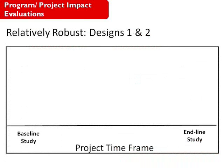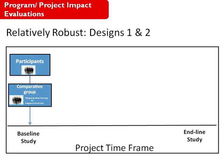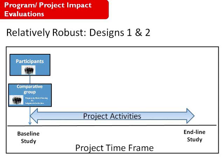Let's start with a general project framework in which the graph shows the baseline study on the left and an endline study on the right, representing the overall project timeframe. In the most rigorous impact evaluation designs — Design 1 and 2 — before activities are started, a baseline study is conducted among two groups: the individuals or households that will be participants receiving our interventions, and then a control or comparative group. Then once those baseline studies are conducted, the activities occur.